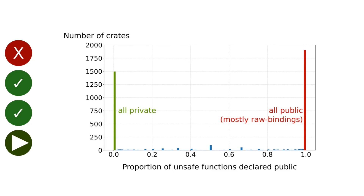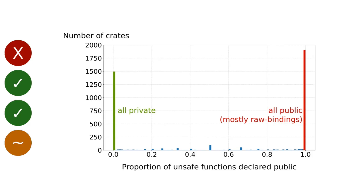Since that high number of public functions directly contradicts the third principle, we looked into the proportion of unsafe functions declared as public. We found that most crates either have all unsafe functions as private or as public, with only a few crates in between. We checked the crates that have many public unsafe functions and found that most of them provide raw bindings either for accessing hardware or for accessing libraries written in other languages. Therefore, even though it is hard to make definite conclusions, it seems that Rust programmers at least attempt to not expose unsafe functions to their clients.